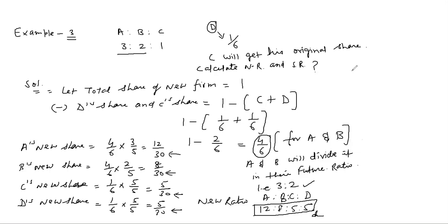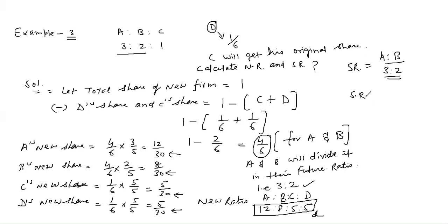Now for the sacrificing ratio: it has not been told from whom D acquired his share. We will assume D acquired his share from A and B only, because C clearly refused — C will get his original share. It has also not been told how much A surrendered in D's favor or how much B surrendered. No future ratio for A and B is given. So the sacrificing ratio of A and B will be their old ratio, which is 3:2.